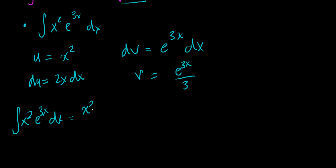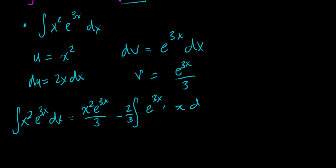That's x squared times e to the 3x all over 3, minus the integral of v du. Well, v is e to the 3x over 3 — I'll pull the one third out front since it's a constant — and I'm multiplying that by 2x dx. Since 2 is also a constant, I'll pull that out front as well, leaving just x dx inside the integral.